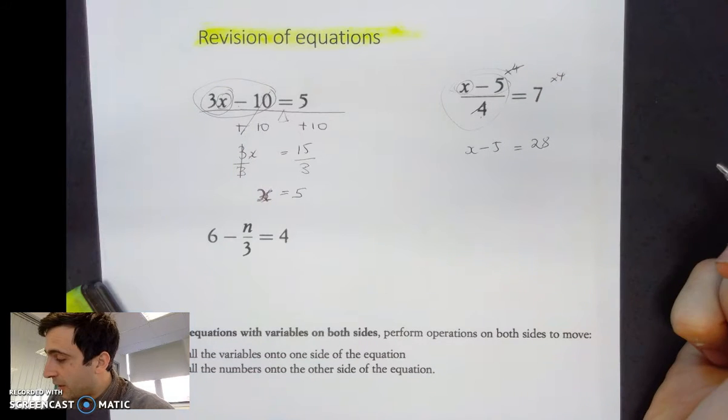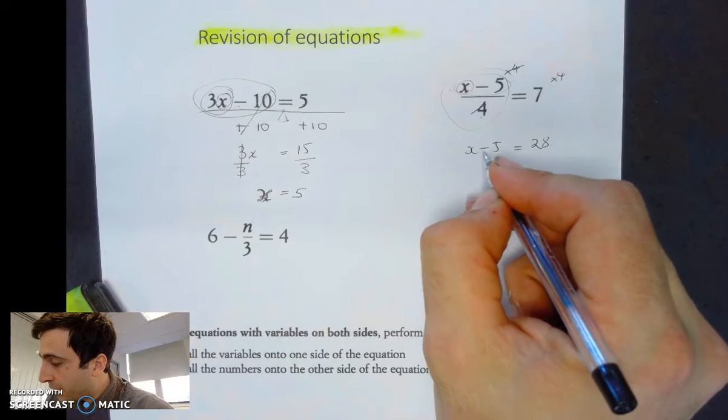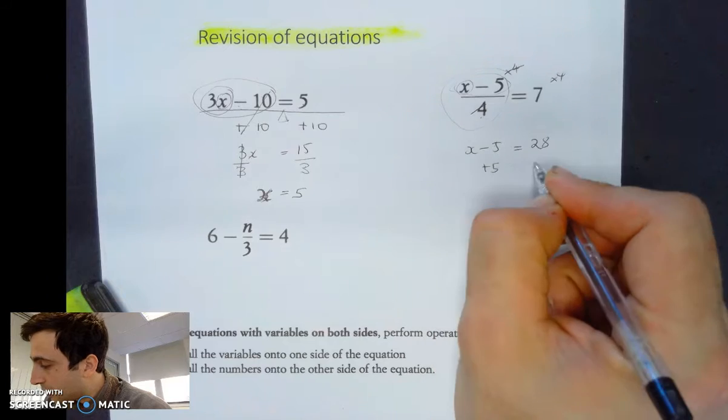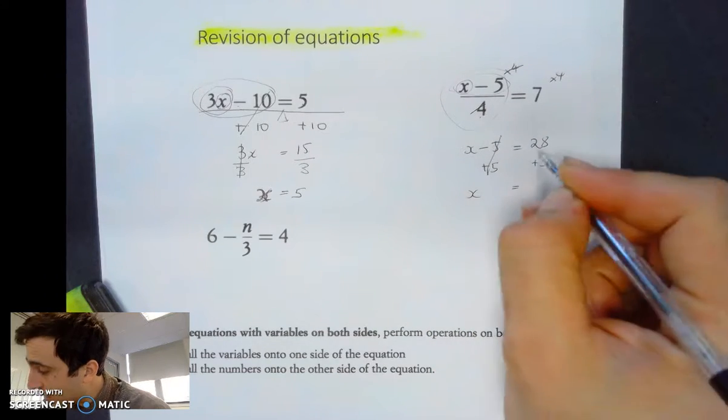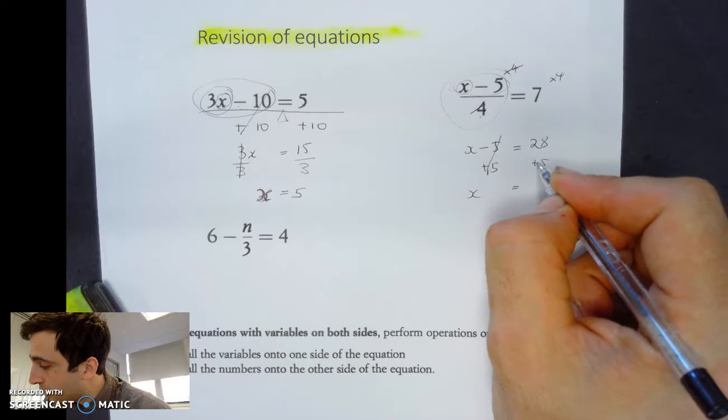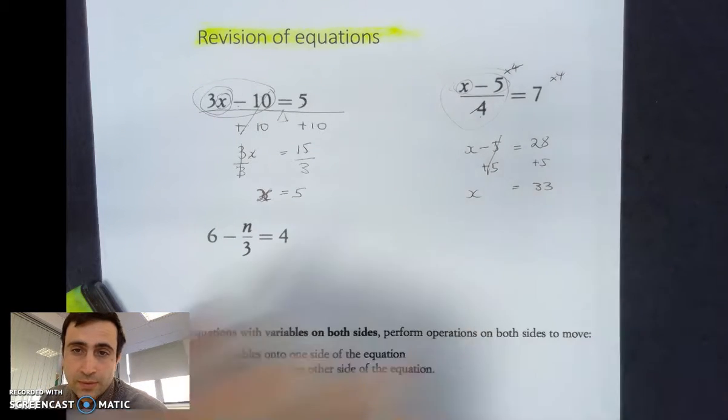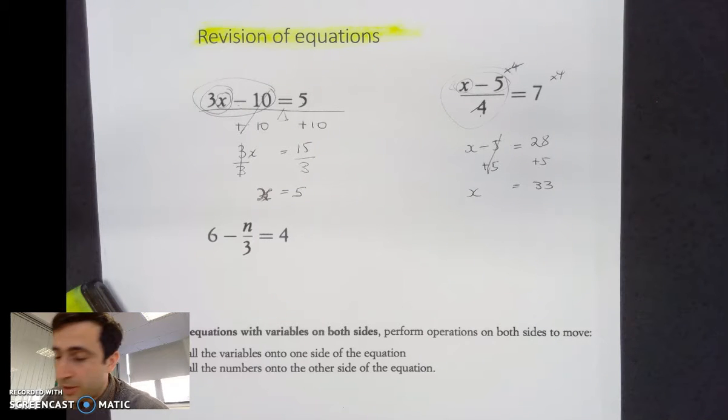That's being subtracted by 5, so we add 5 to both sides. x equals 28 plus 5, which is 33. So there are really only two step equations for this one.